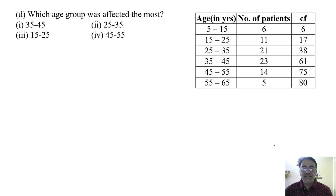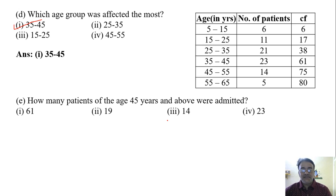Now the fourth question: which age group was affected the most? 35 to 45. The correct answer is 35 to 45. And the last one: how many patients of age 45 years and above were admitted? 14 plus 5, so the correct answer is 19, second option.